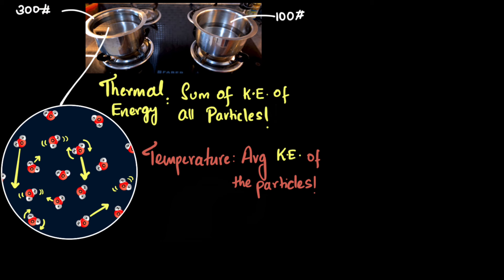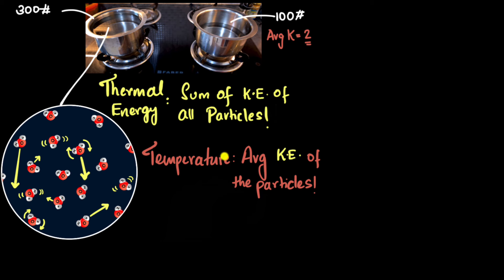If the average kinetic energy is 2 units, that means some molecules will have more than 2 units of kinetic energy and some will have less, but averaged out you get 2. That represents the temperature. If this number is bigger, temperature will be higher; if smaller, temperature will be lower.